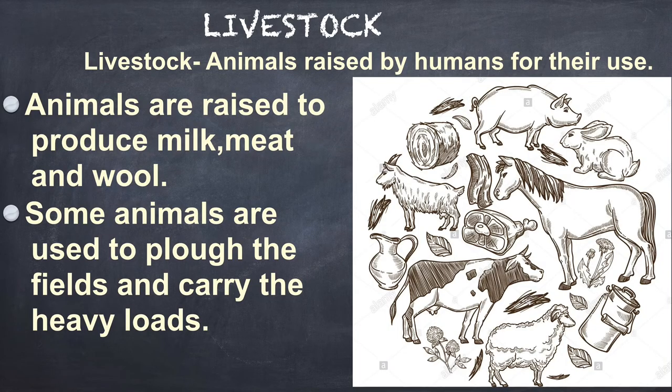The fourth important natural resource is livestock — animals raised by humans for their use. Animals have been a great source of help to us from the beginning. The domesticated or tamed animals that are useful to us are called livestock. Animals are raised to produce milk, meat and wool. Some animals are also used to plow the fields and carry heavy loads.